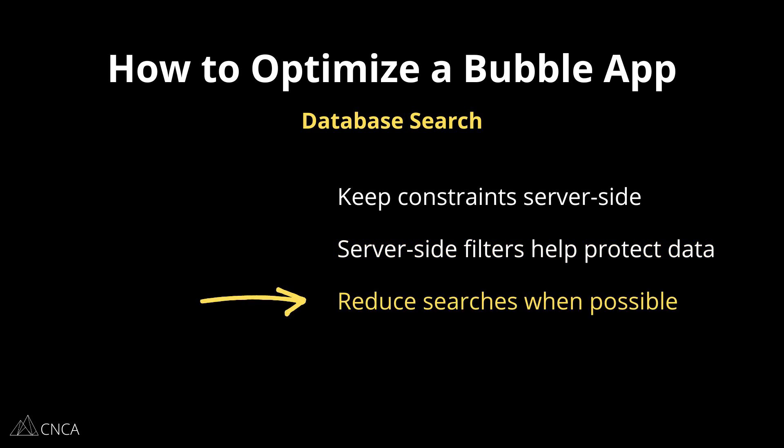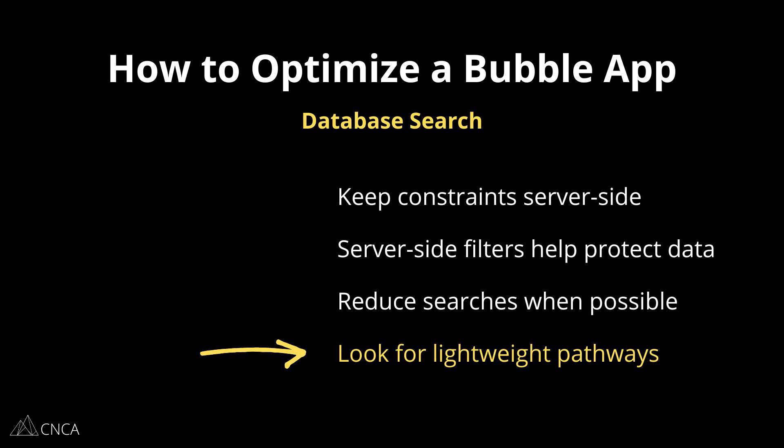You also want to try and reduce searches as much as possible. There are many ways to retrieve data in Bubble, so see if you can find other pathways to the same information that don't always need to involve a search. It's really easy to just fall back to searches because they're always going to be an option, but that doesn't mean it's always the best option. Reducing and optimizing searches may mean relying on custom states more, on list fields more, or just reworking your data structure so that you can create more efficient pathways to the data that you need.